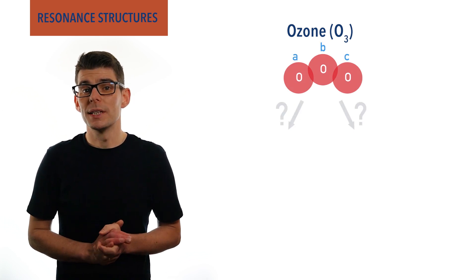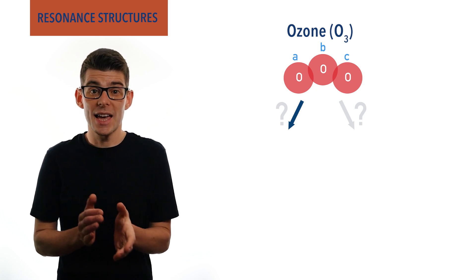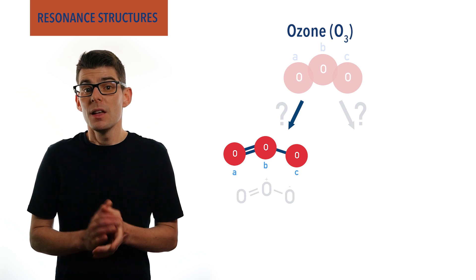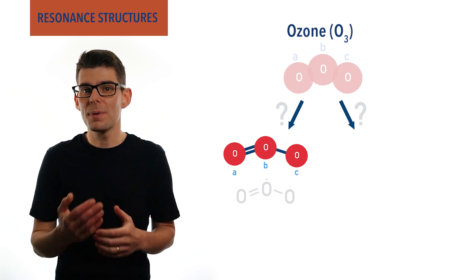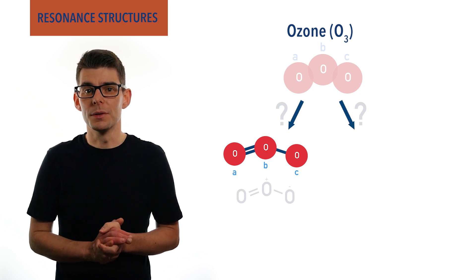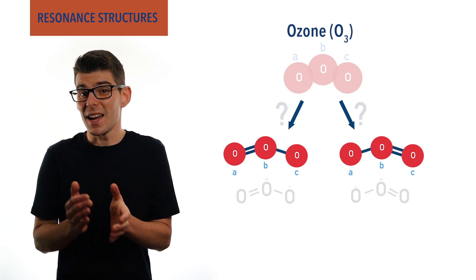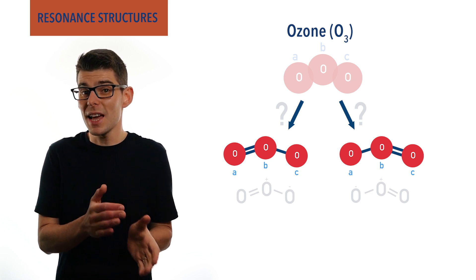One possibility shows a double bond between oxygen atoms A and B, with a single bond between B and C. The other possibility swaps the positions of the single and double bonds. By labeling the oxygen atoms, we can see that each structure is actually unique and isn't the same as the other.